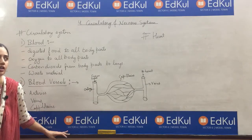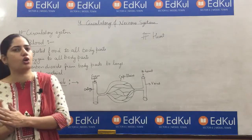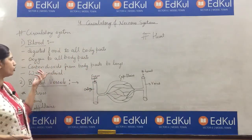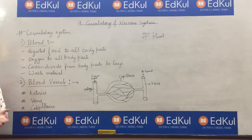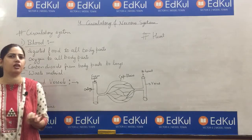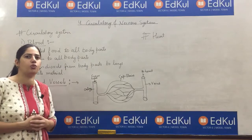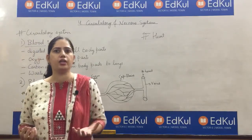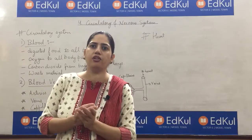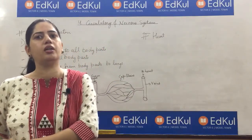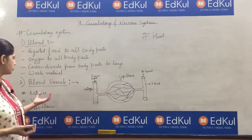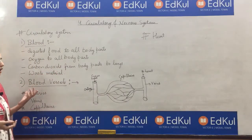Carbon dioxide is also transported by the blood. When we exhale, carbon dioxide leaves through the lungs via the blood. Blood also carries waste material — every cell in the body produces some waste material, and that waste material mixes with the blood and goes to the kidney for purification.